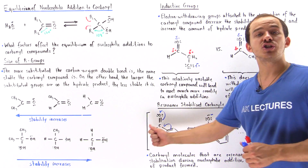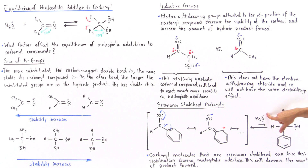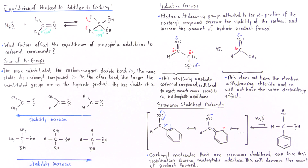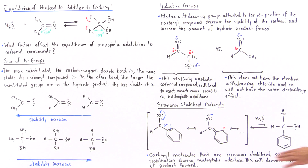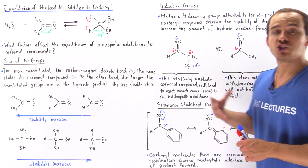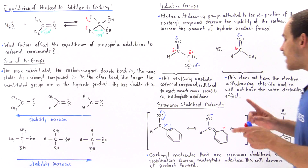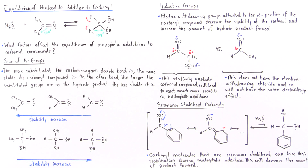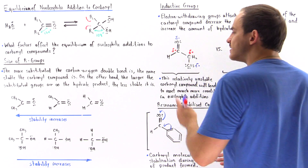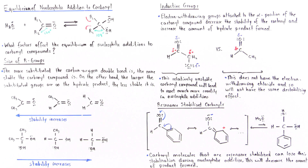However, if this reactant undergoes nucleophilic addition of water, the resonance stabilization is actually lost. In the hydrate product, we do not have the same resonance stabilization. We simply have the benzene ring, and it cannot interact with the adjacent carbon because that carbon is sp3 hybridized in the product, while it is sp2 hybridized in the reactant. Carbonyl molecules that are resonance-stabilized lose that stabilization during nucleophilic addition, which means the reaction is not favorable and will not readily take place — so we will have much reactant left over and not much product formed.